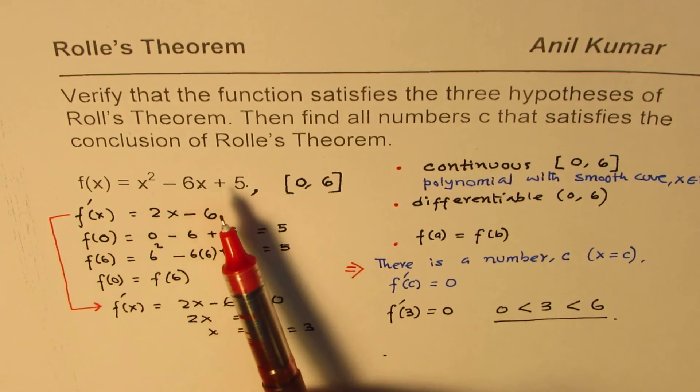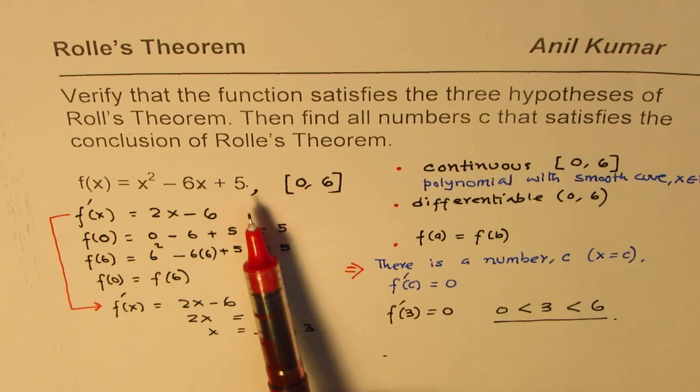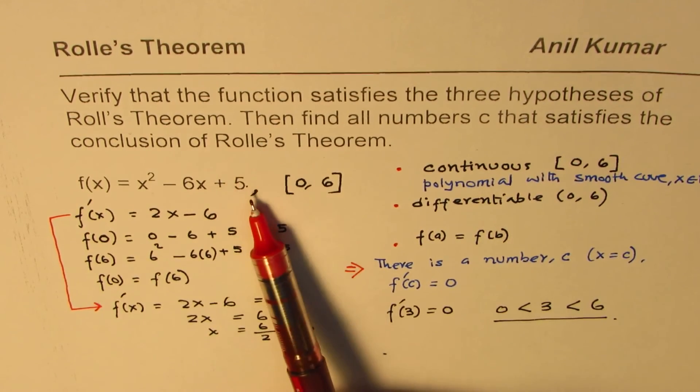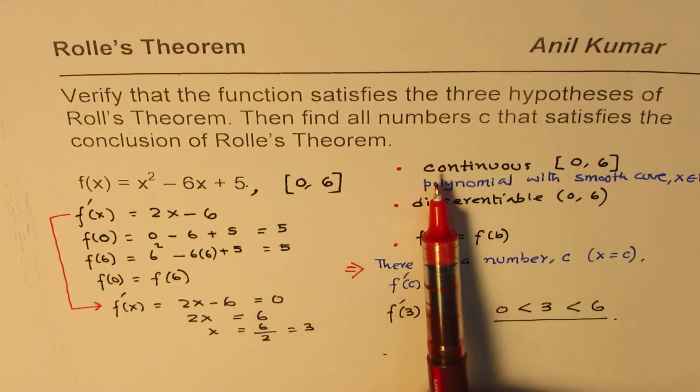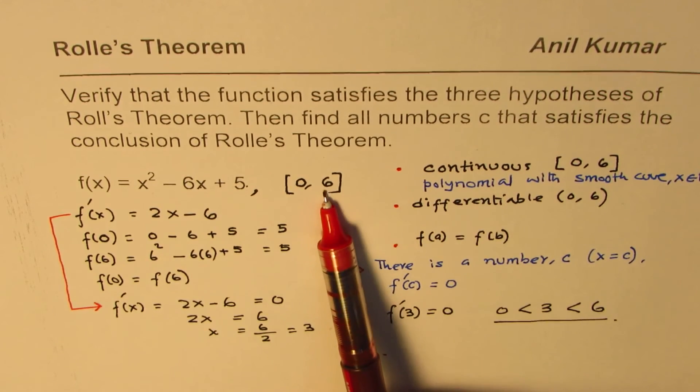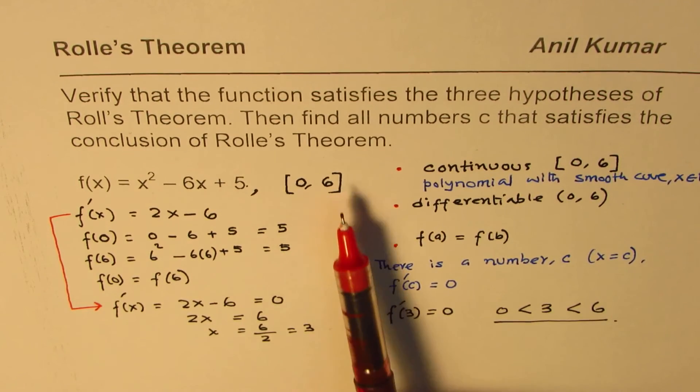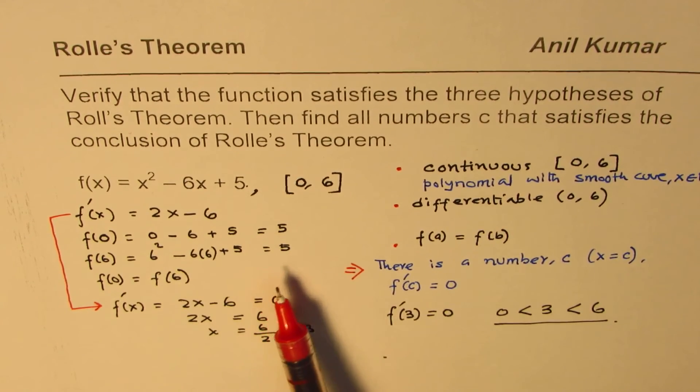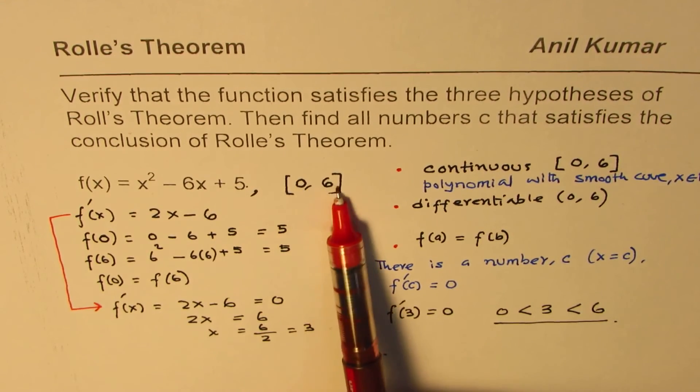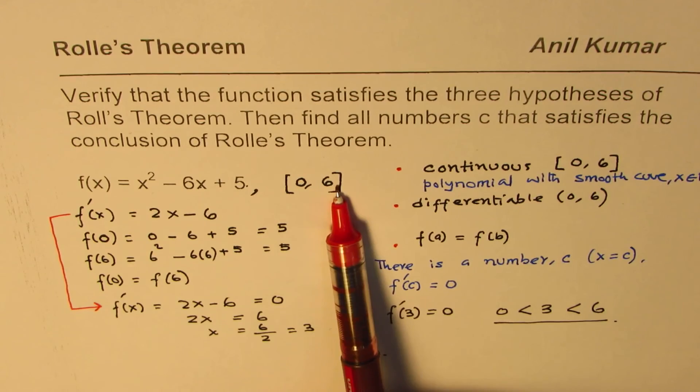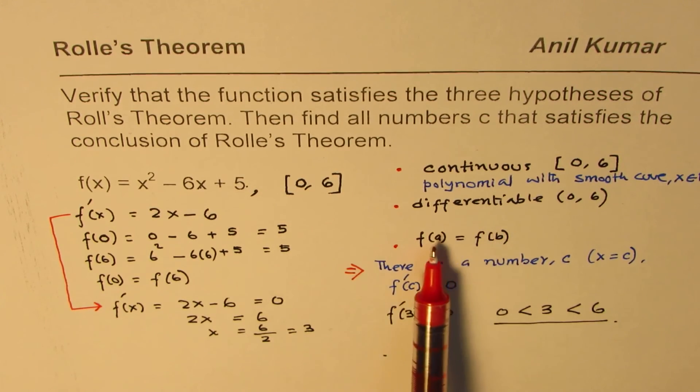So, whenever there is any question like this, where we need to verify Rolle's theorem, we have to prove that the function is continuous within the given closed interval, it is differentiable in the open interval, and the values at these two ends, f(a) and f(b), is same.